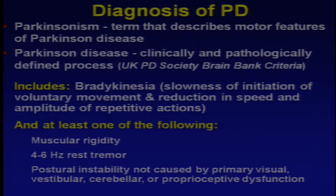A little more about Parkinson disease — starting with some definitions. I'm going to use the word Parkinsonism, which describes the motor features of Parkinson disease. Parkinson disease is clinically and pathologically defined by rigid criteria from the UK Parkinson Disease Society Brain Bank. It includes bradykinesia — the slowing of initiation of voluntary movements and reduction in speed or amplitude of repetitive actions — and at least one of the following: muscular rigidity, resting tremor, and postural instability.